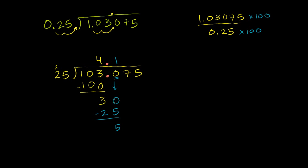I mean, we could do all of this borrowing business or regrouping. This can become a 10. This becomes a 2. 10 minus 5 is 5. 2 minus 2 is nothing. But anyway, 30 minus 25 is 5.